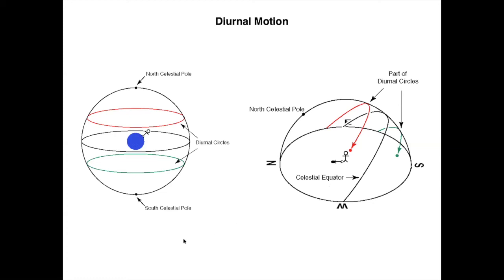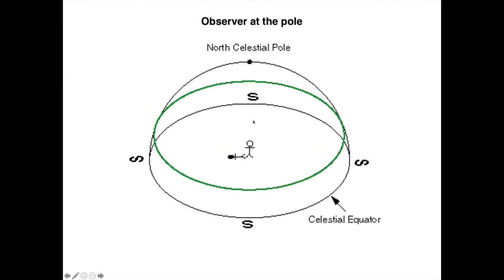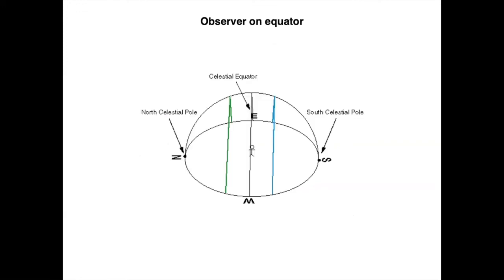One thing you may have already realized is that the inclination of the celestial equator with respect to the zenith is a measurement of the latitude. You can see this easily if you imagine how an observer at the pole would see the diurnal motion. At the pole, the earth is rotating right under you, so the pole is right at the zenith and the diurnal motion would be parallel to the horizon.